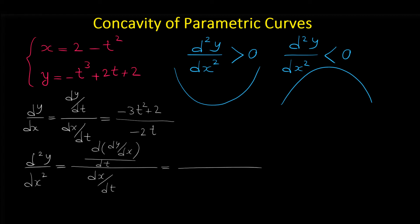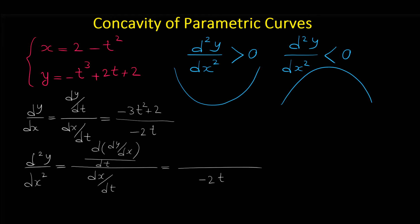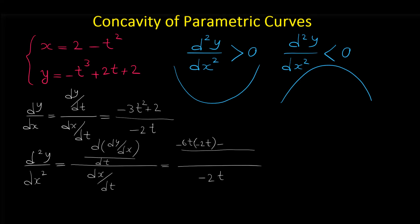The denominator is dx/dt, and dx/dt is simply the derivative of x, which is negative 2t. For the numerator we have to take the derivative of the expression dy/dx. Since dy/dx is a fraction, we use the quotient rule. The derivative of the top is negative 6t, times the denominator negative 2t, minus the numerator times the derivative of the denominator, which is negative 2.